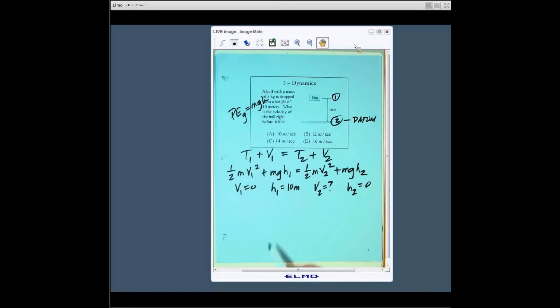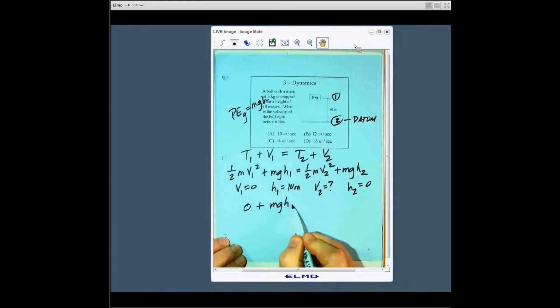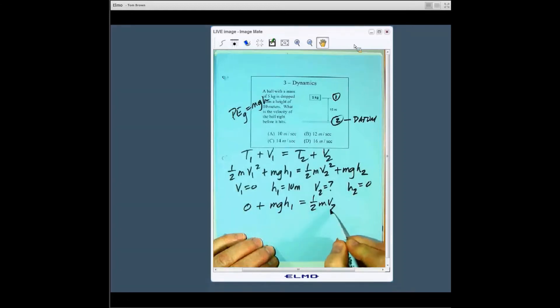So without putting the numbers in here what we have really is zero plus mgh1 equals one half mv2 squared plus zero.